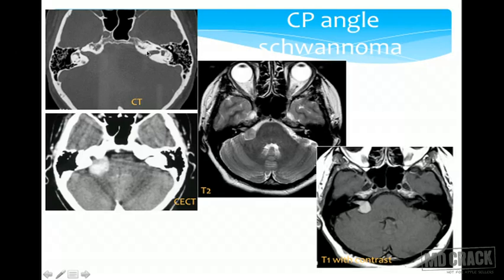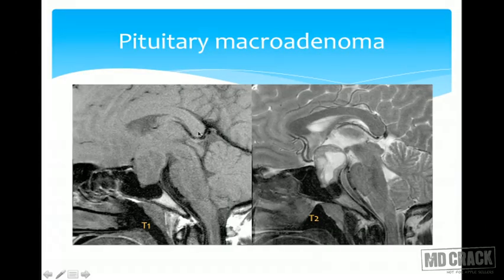A patient presenting with right-sided tinnitus: CT showed widening of the internal auditory canal compared to the left side, with increased enhancement on post-contrast images. MRI confirmed the lesion to be a cerebellopontine angle schwannoma.